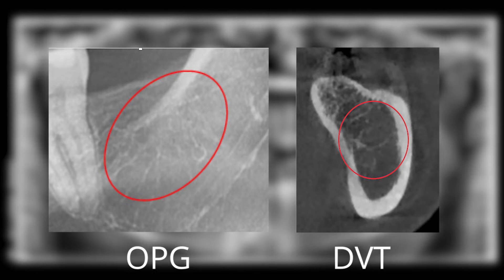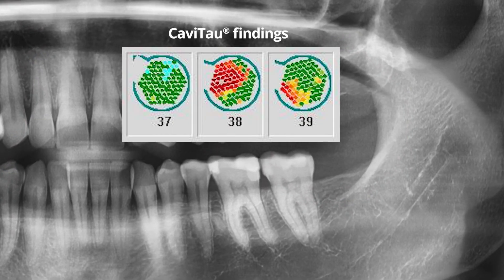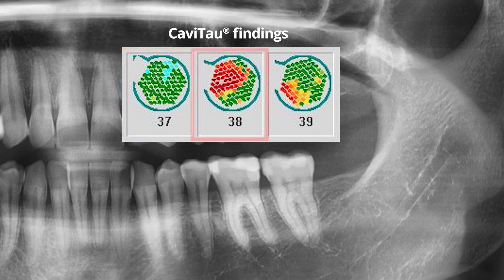Bone density measurement with the Cavitat device clarifies the question of whether the inflammatory process in 3,8 is worth surgery. The Cavitat results at the bottom left of the image show a healthy tooth, 3,7, in green, representing healthy bone.